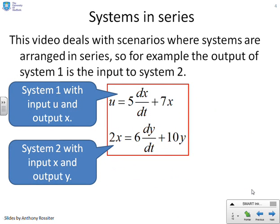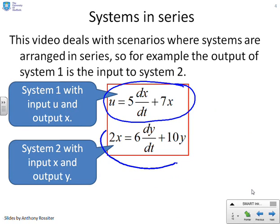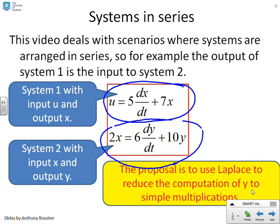Next, we want to look at what happens when systems are arranged in series. Here's an example: system 1 has input U and output X, while system 2 has input X and output Y. The output of system 1 becomes the input to system 2. We want to ask how we deal with this in block diagram notation. We will use Laplace to reduce the computation of Y to simple multiplications, leading to a simple block diagram representation.